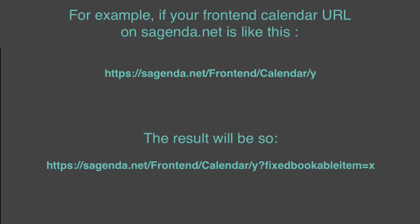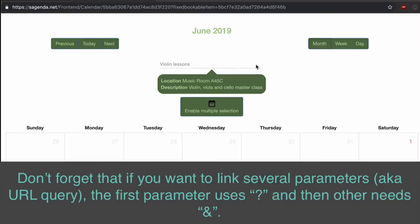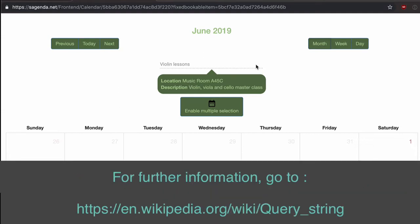For example, if your front-end calendar URL on Sagenda.net is like this, the result will be so, where Y is your account — don't change it — and X is your Bookable Item ID. Don't forget that if you want to link several parameters, also known as URL Query, the first parameter uses ?, and then the others need ampersand. For further information, go to Query String.